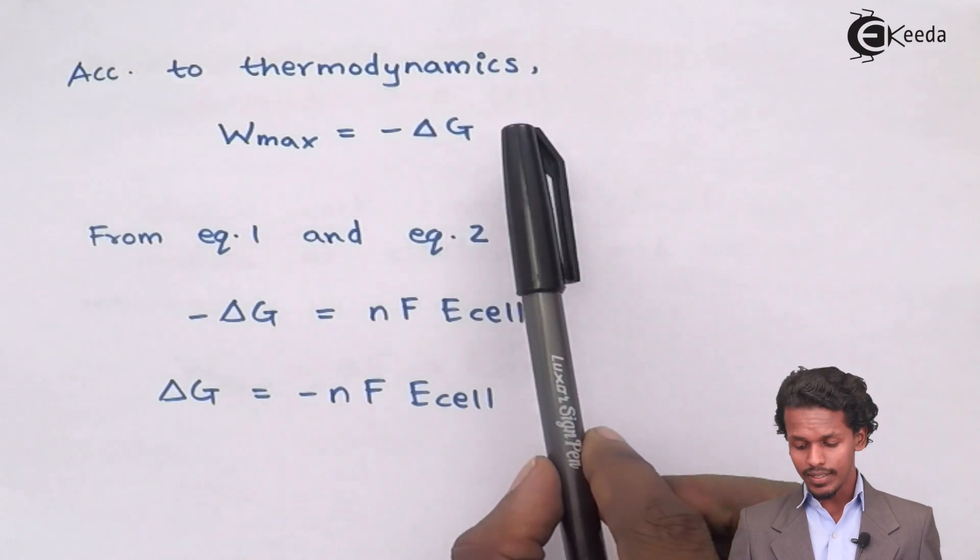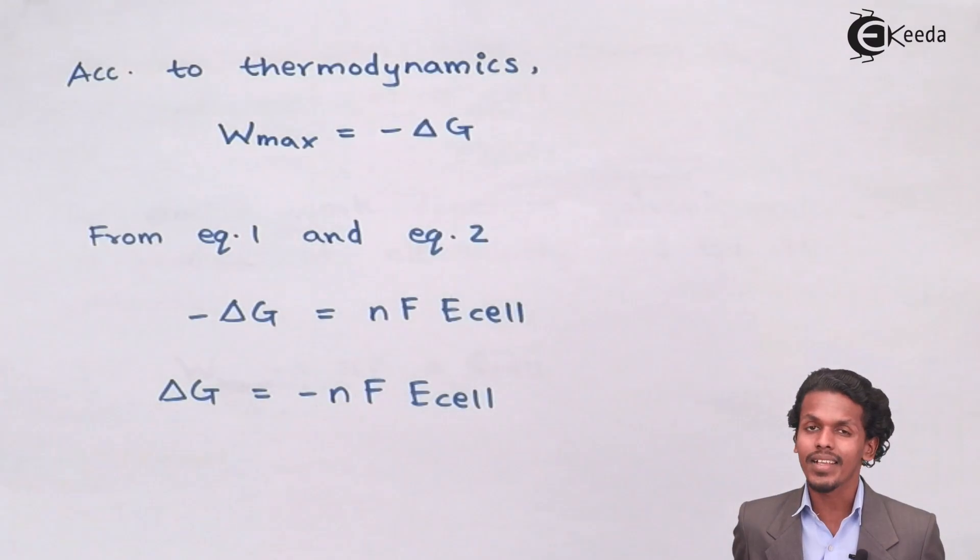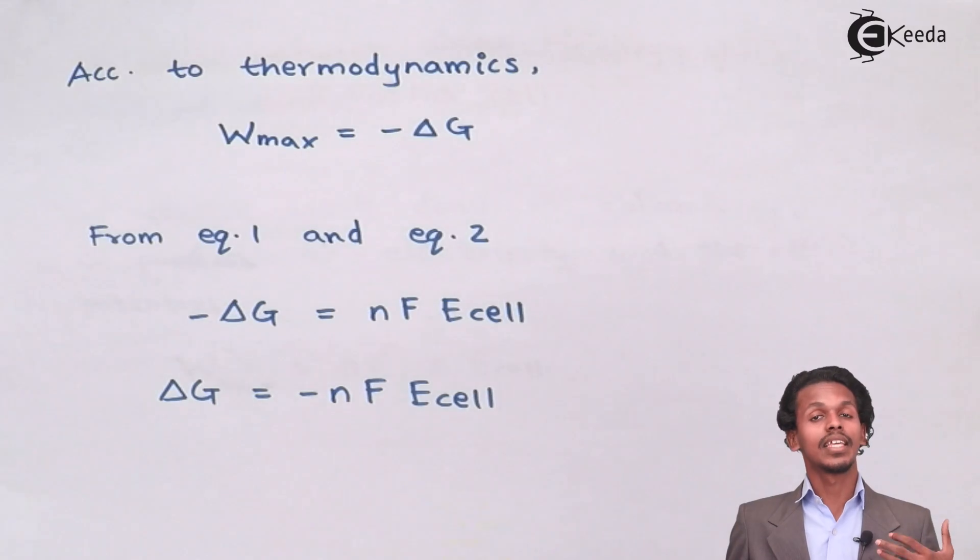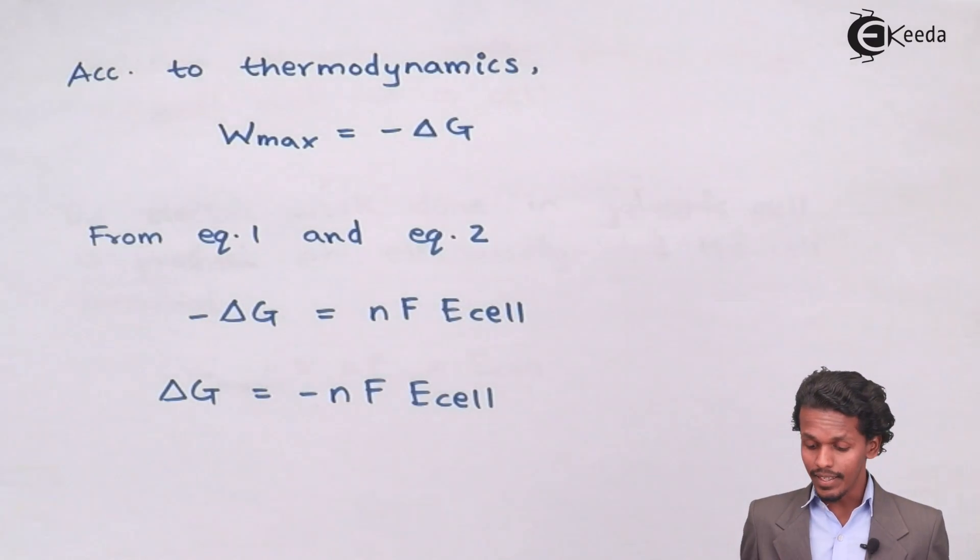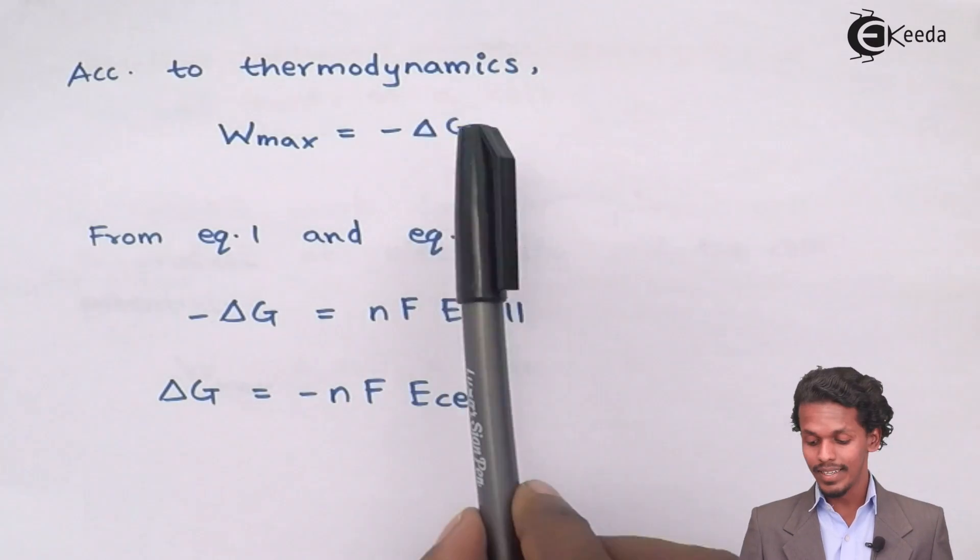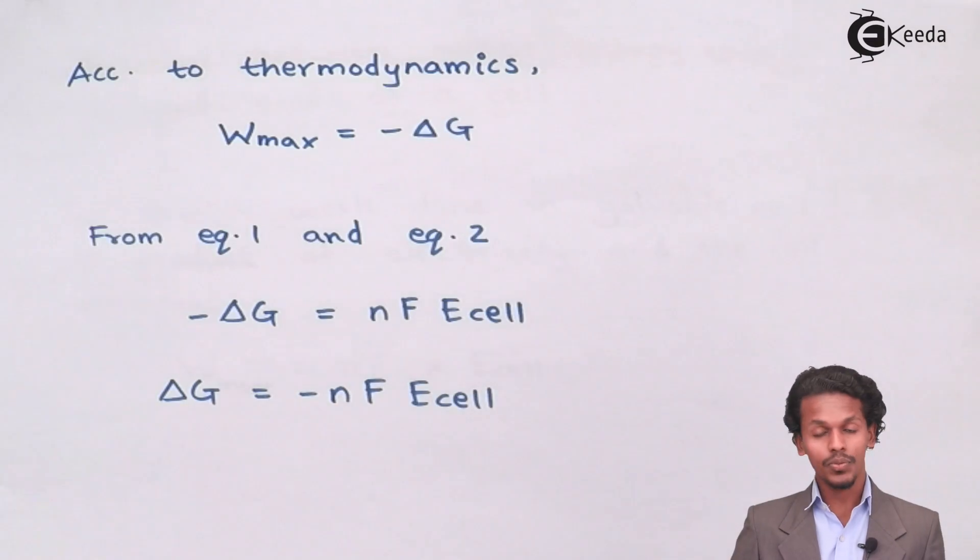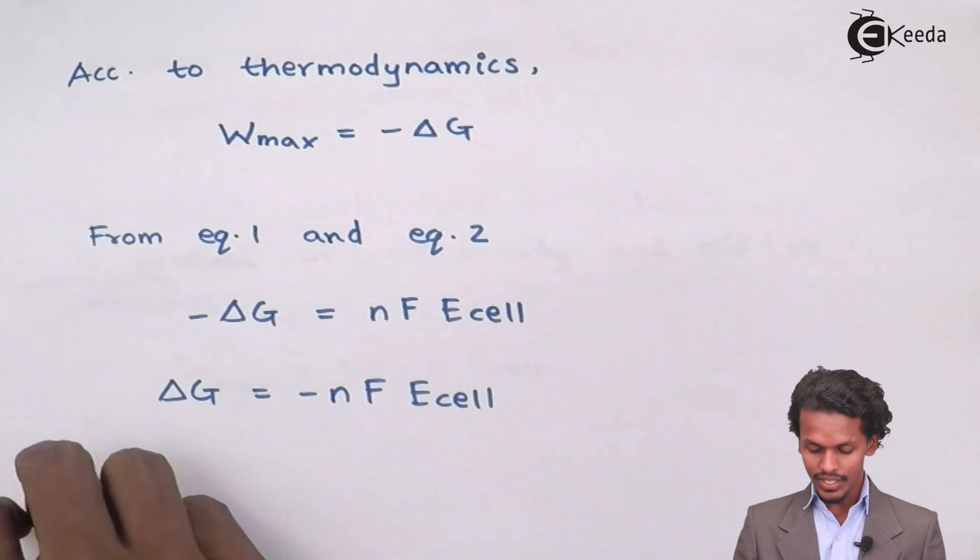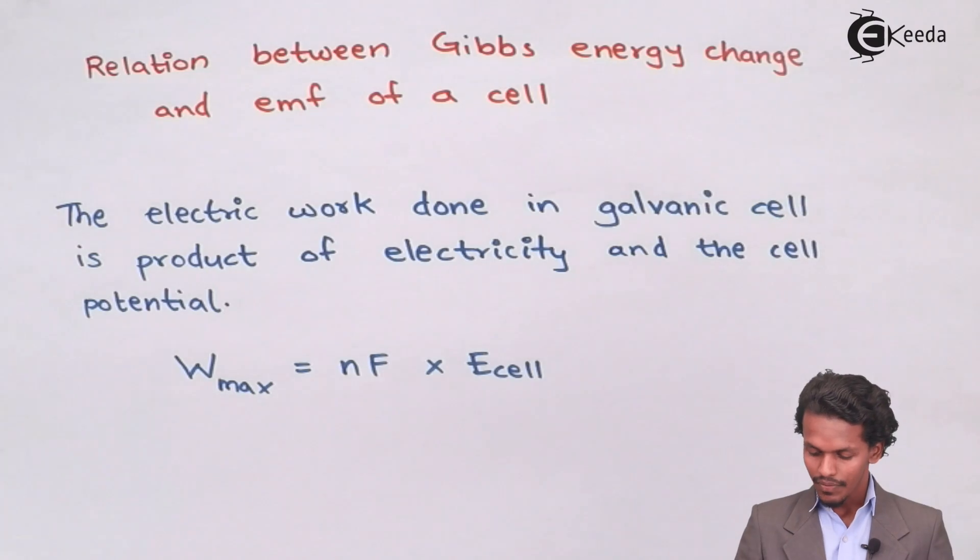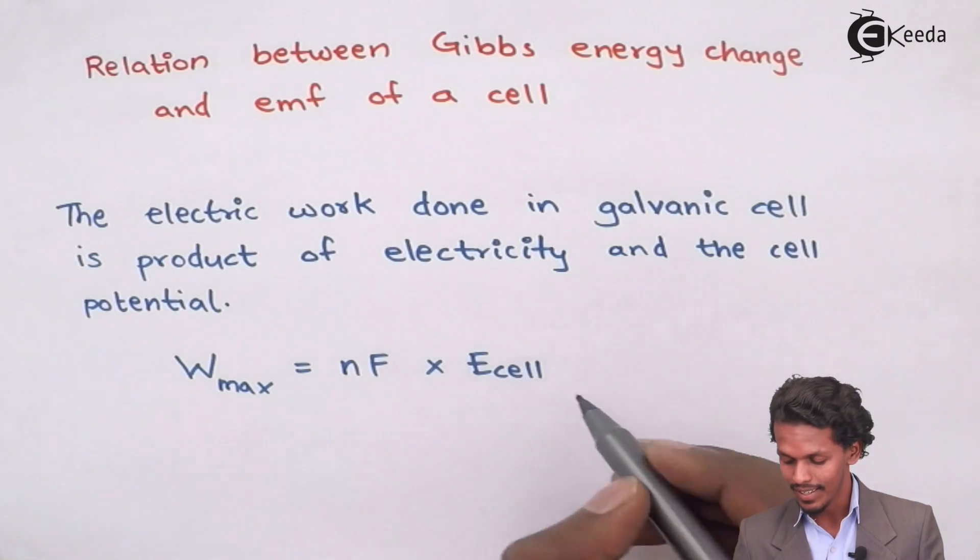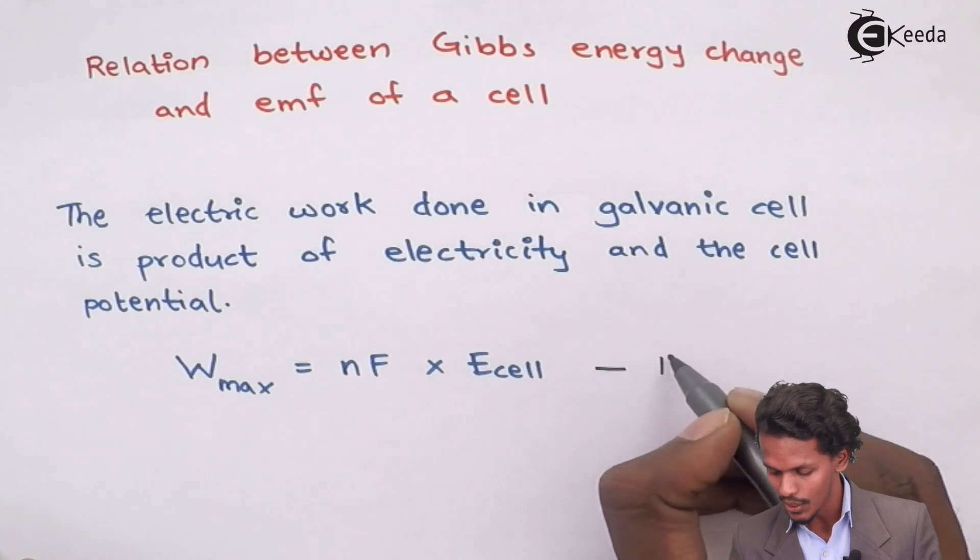But according to thermodynamics, we know that W max is equal to minus delta G. In this case, delta G is nothing but Gibbs free energy change. So W max equals minus delta G. So we have this relation also. So initially we have got a relation as equation number 2.